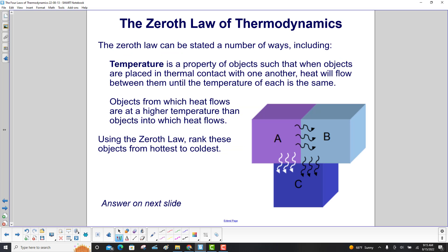The Zeroth Law can be stated a number of ways, including: Temperature is a property of objects such that when objects are placed in thermal contact with one another, heat will flow between them until the temperature of each is the same.